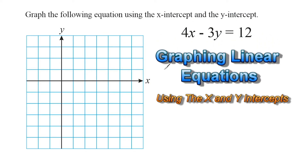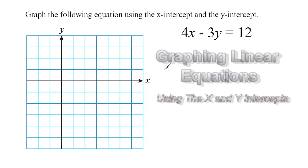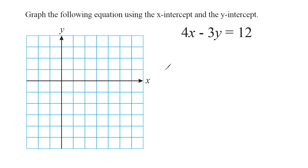What we're going to do in this tutorial is learn how to graph an equation by only finding the x-intercept and the y-intercept. We're going to figure out at what point does our line cross the x-axis and at what point does our line cross the y-axis. Remember, you really only need two points to form a line on your graph, so we're going to find those two specific points.